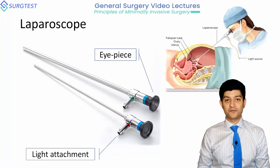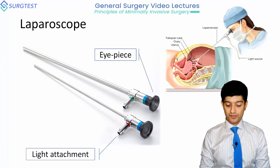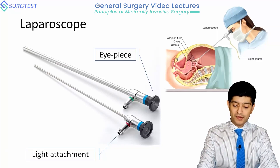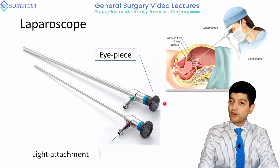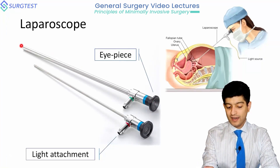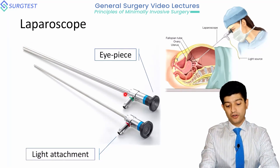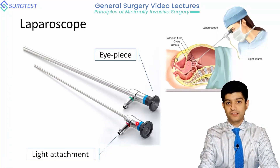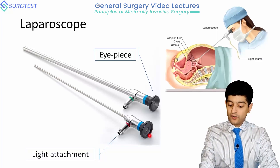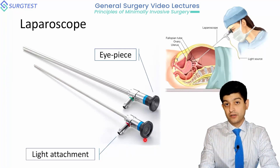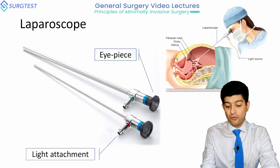Let's go into the components of the equipment required for any of these MIS procedures. The first is the laparoscope. All laparoscopes have an eyepiece on the proximal end that is universal, meaning it fits into any camera system. Some laparoscopes may be 10 millimeters across, others five millimeters, but all of them have a light attachment on one side. The proximal end is called an eyepiece because there was a time when camera systems for laparoscopy and endoscopy did not exist.